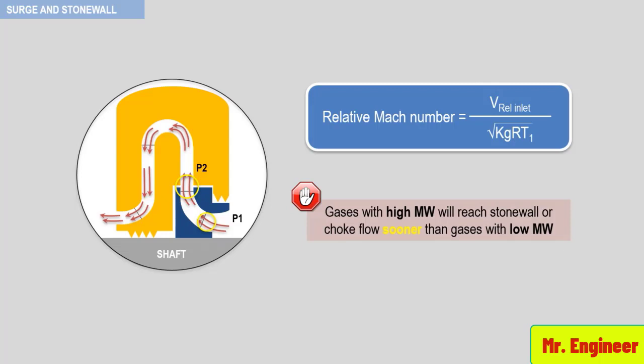Also, dynamic compressors can only operate in stonewall if the head required by the process system is low enough to allow the compressor to operate in this high velocity region of the performance curve. For economic reasons, this is rarely the case, since most engineering contractors optimize process pipe design to minimize pipe diameter, and therefore increase the head required at high flow rates.